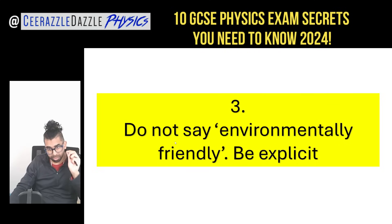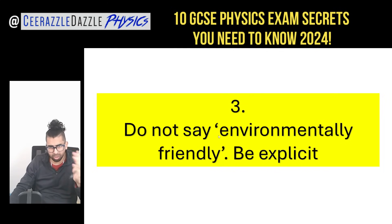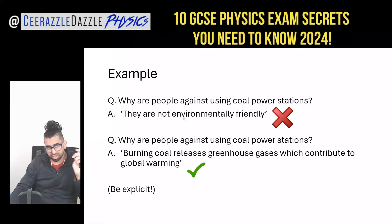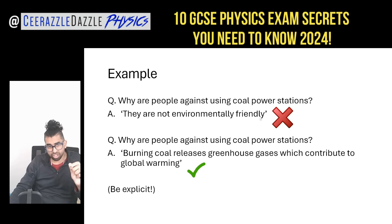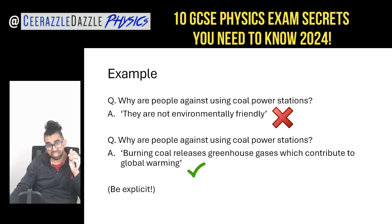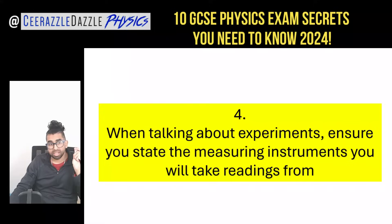Tip three: do not say 'environmentally friendly' — you must be explicit. Many students write 'they are not environmentally friendly' and think they'll get the mark, but they won't. A better answer to 'why are people against using coal power stations?' would be: 'Burning coal releases greenhouse gases which contribute to global warming.' That explicit answer gains the mark; the vague one does not.